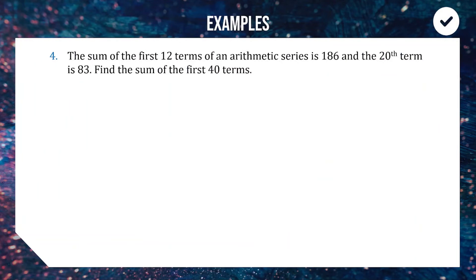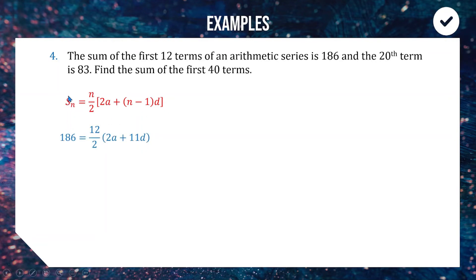Question 4: the sum of the first 12 terms of an arithmetic series is 186 and the 20th term is 83. Find the sum of the first 40 terms. To find that we need a and d. From the sum of the first 12 terms: 186 = (12/2)(2a + 11d) = 6(2a + 11d) = 12a + 66d. We label this equation 1. When you have two unknowns, simultaneous equations is usually the way to go.